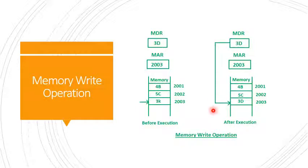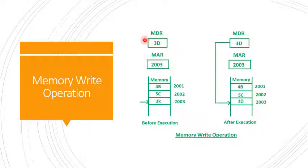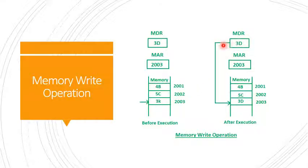Memory write operation transfers the address of the desired word to the address line and transfers the data bits to be stored in the memory to the data input line, then activates the write control line. In the figure shown, the memory address register contains 2003 and the memory data register contains 3D before execution, and location 2003 holds data 3K. After execution of the write instruction, 3D will be written to memory location 2003.